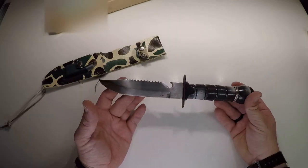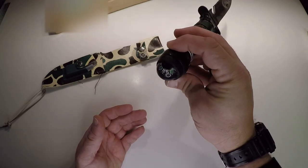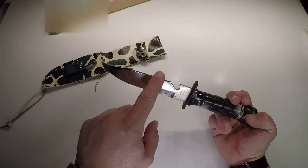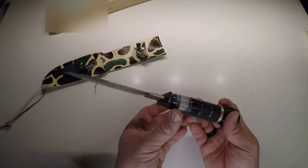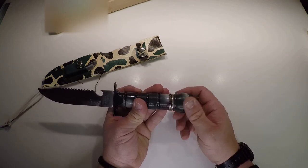Check that bad boy out. It's got the compass, bottle opener, tree saw. It's actually kind of sharp. But this is the best part here: the secret container.